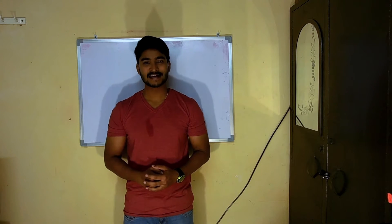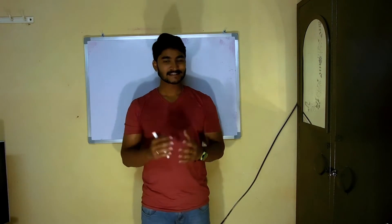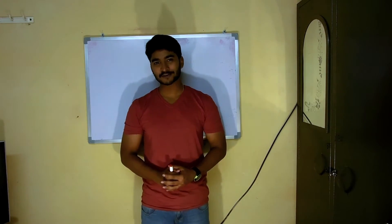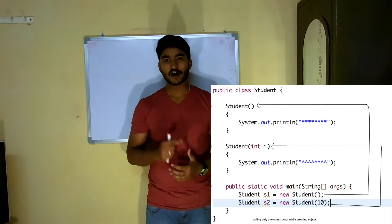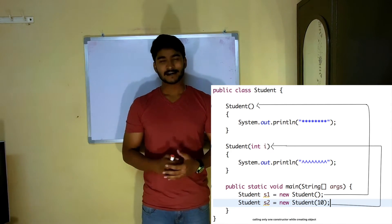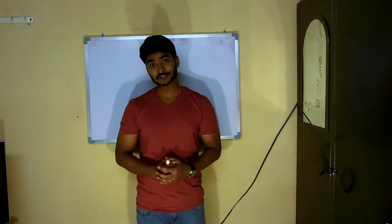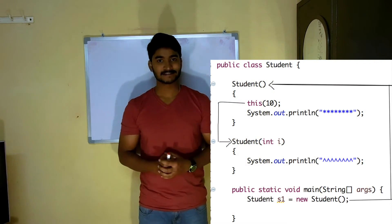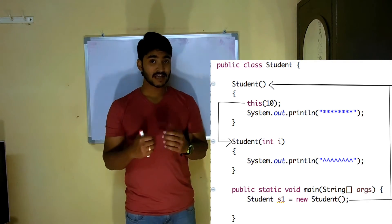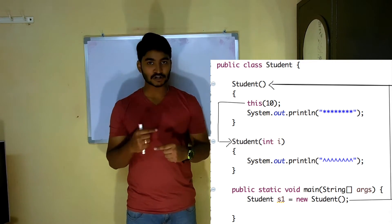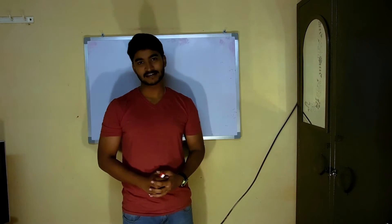Constructor chaining is essentially a chain of constructors. As you know, in a class you may create multiple constructors, but when creating an object only one constructor is called. Using constructor chaining, you can call multiple constructors while creating a single object. Let's see an example of how this works.